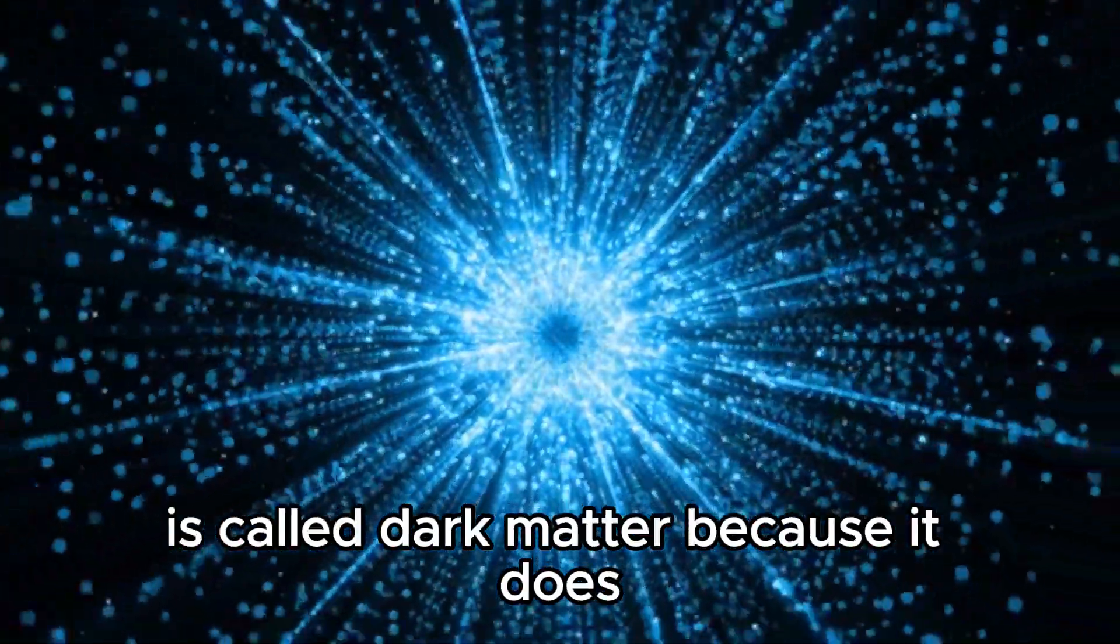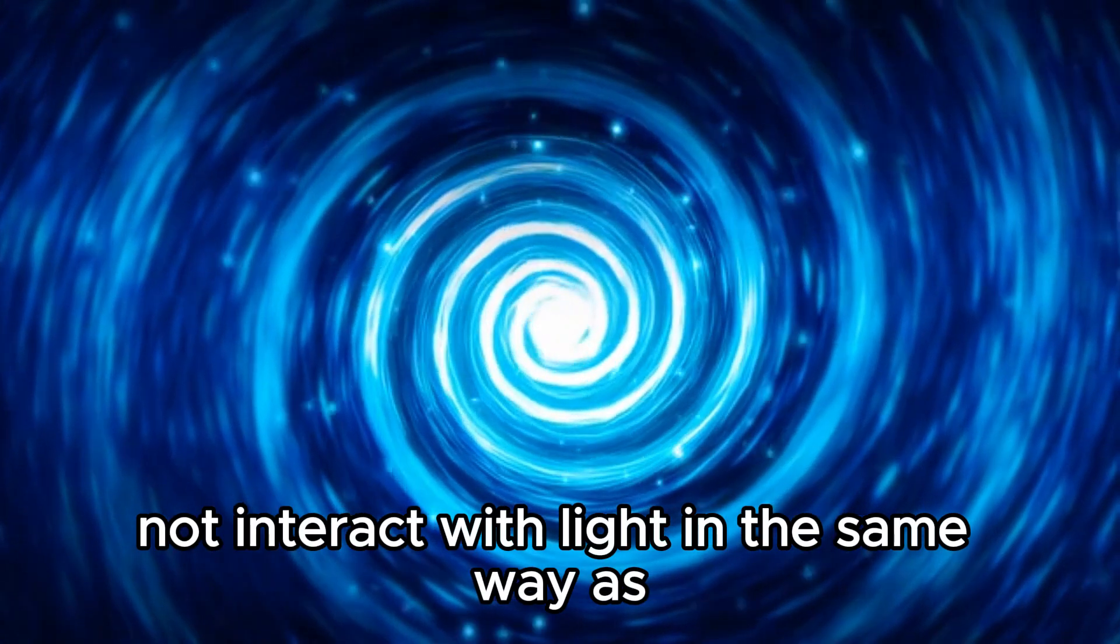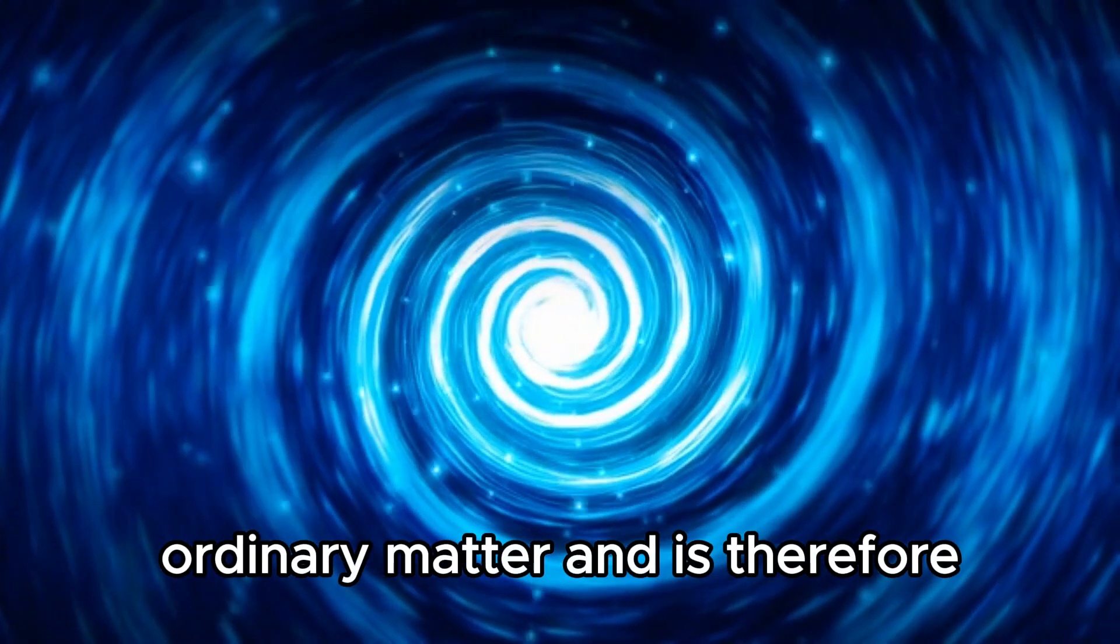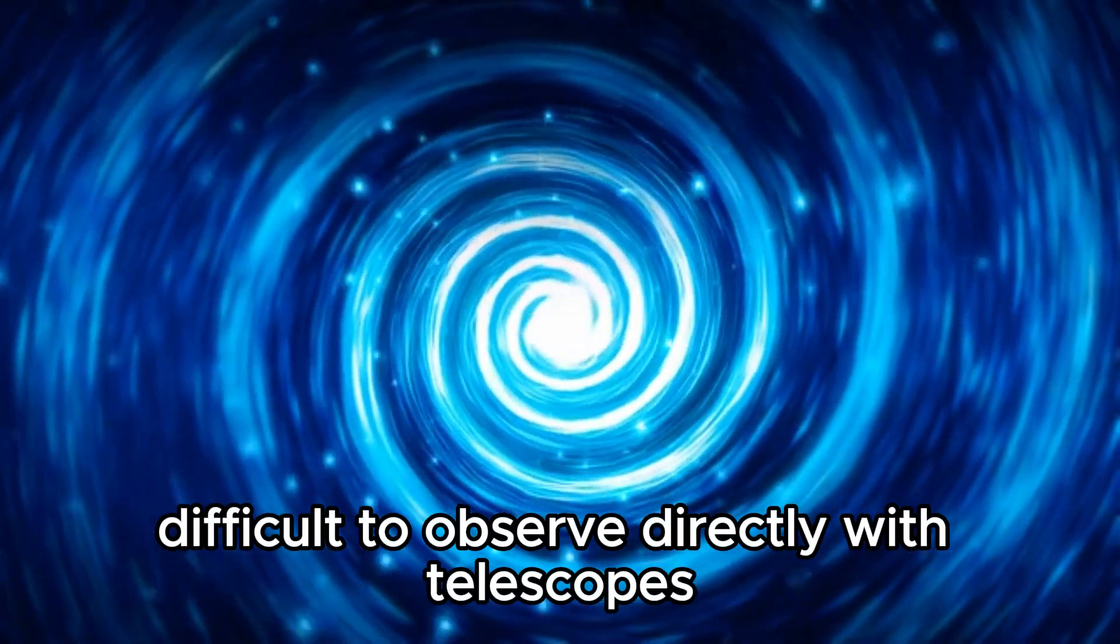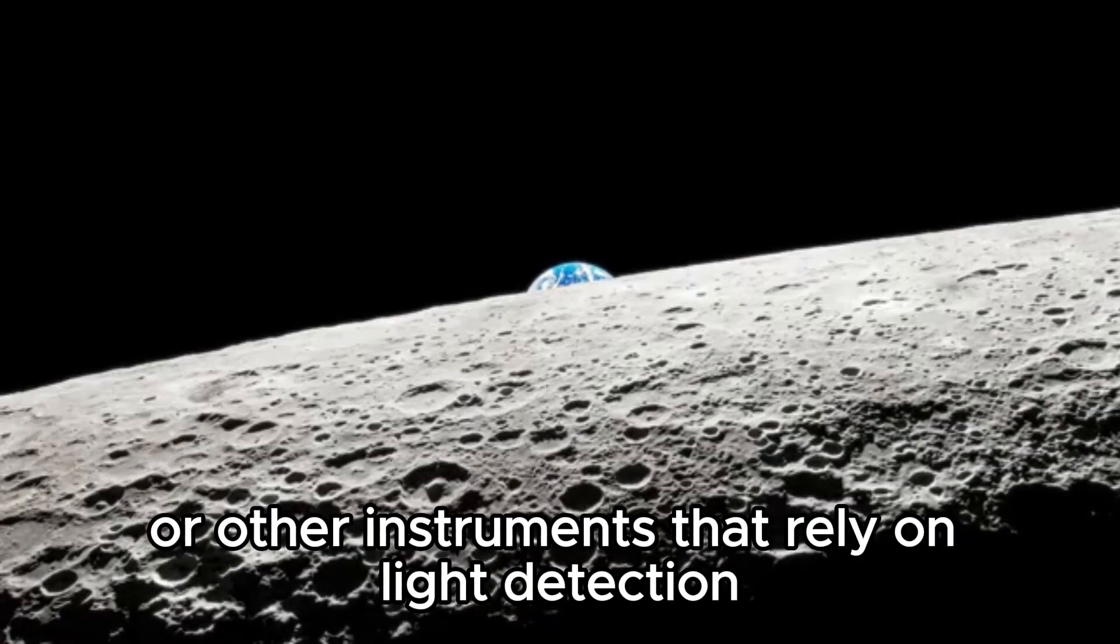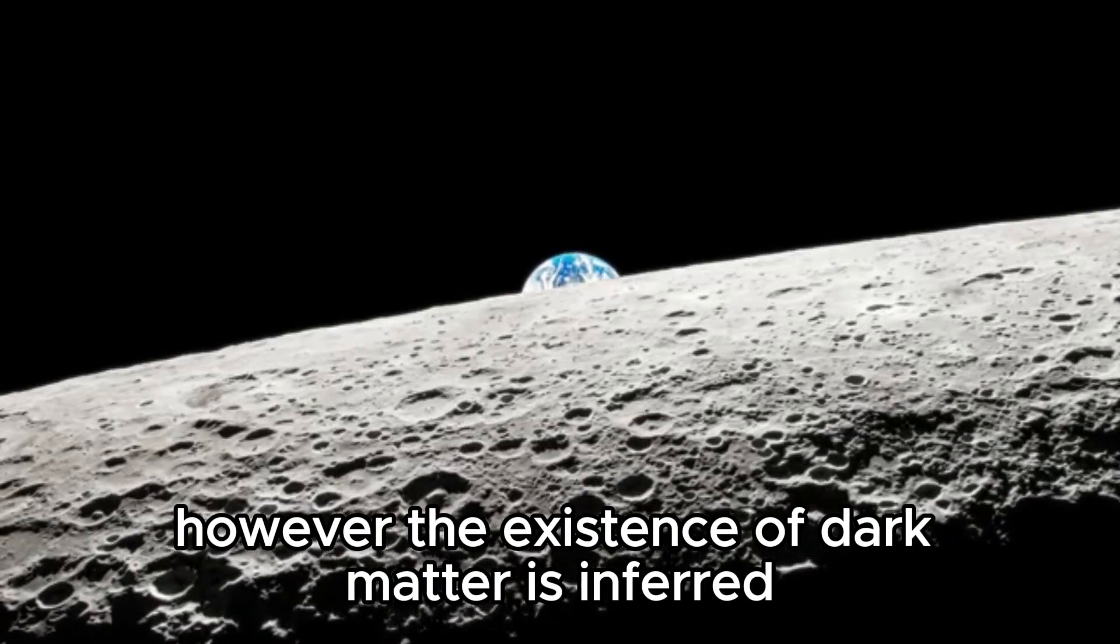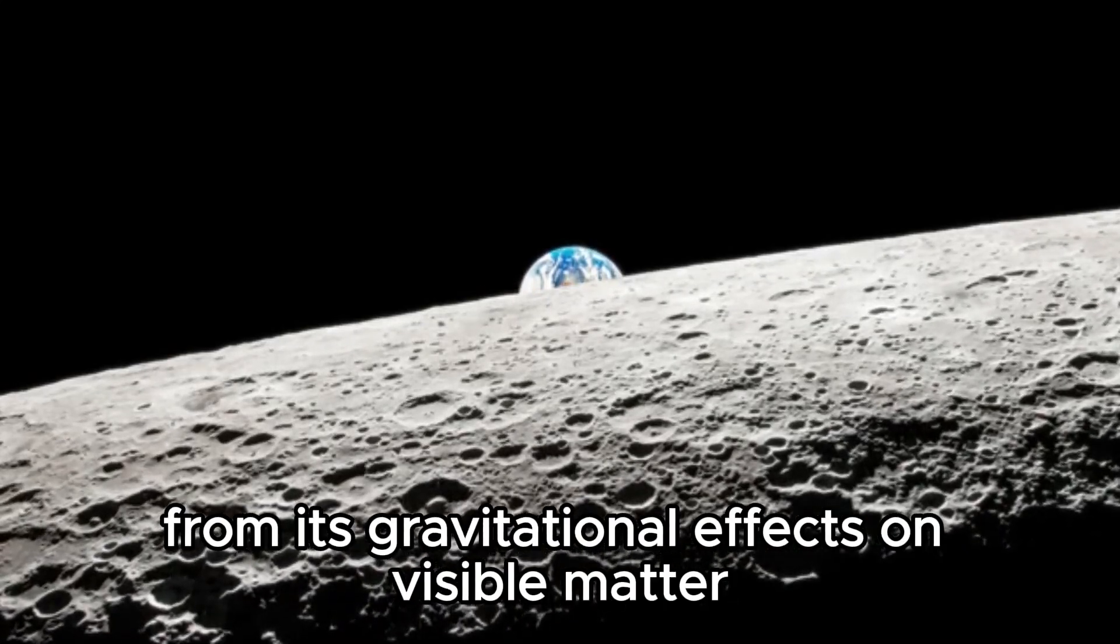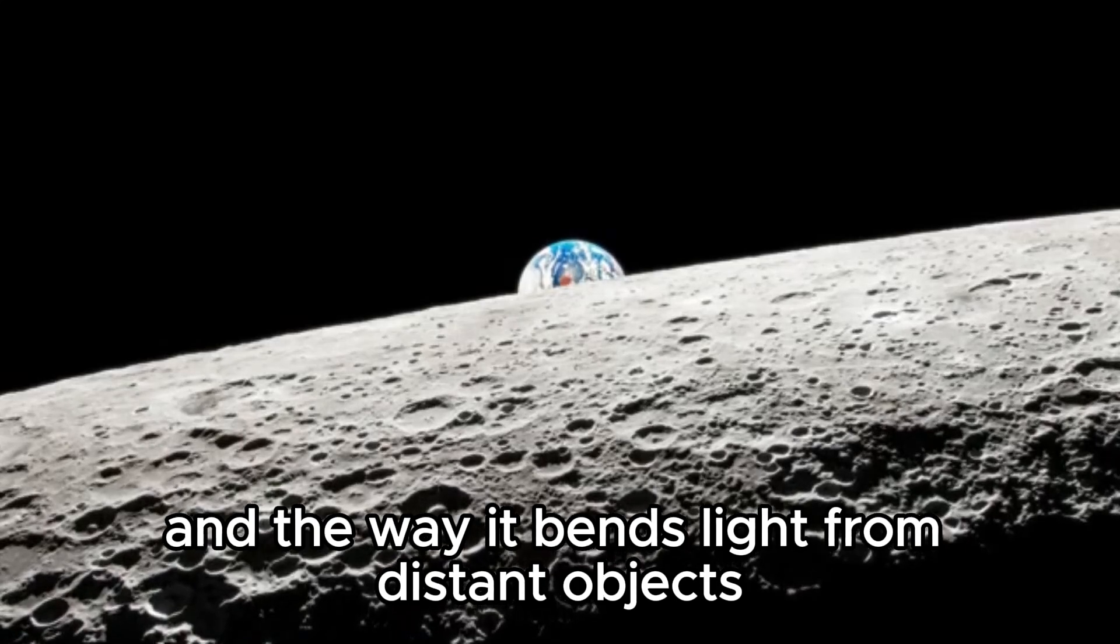Dark matter is called dark matter because it does not interact with light in the same way as ordinary matter and is therefore difficult to observe directly with telescopes or other instruments that rely on light detection. However, the existence of dark matter is inferred from its gravitational effects on visible matter and the way it bends light from distant objects.